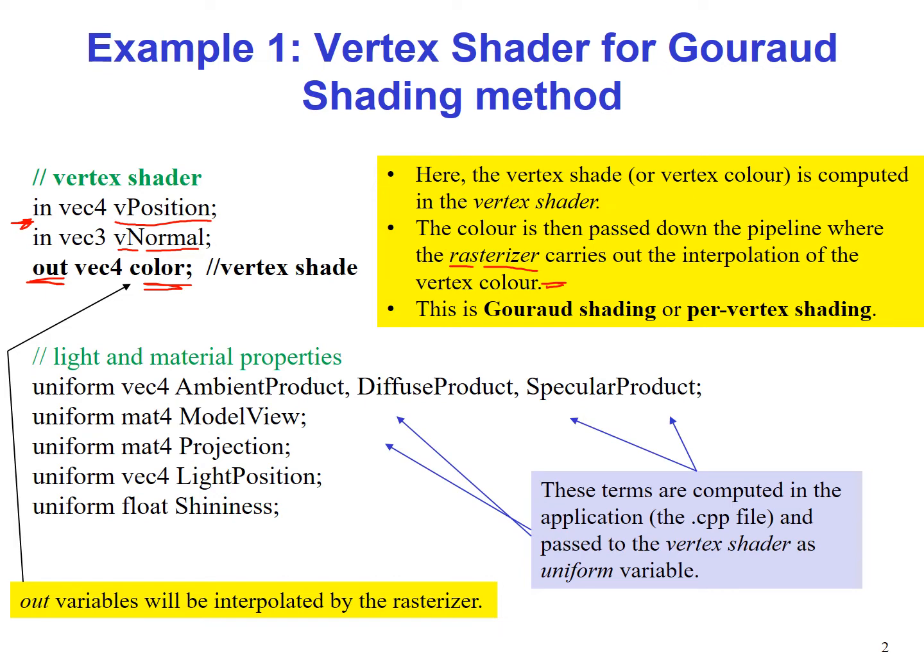Now we have uniform variables coming from the application program, which are the ambient product. This is the light material property, so we've already performed the product of the light material inside the application program. We have the diffuse product.